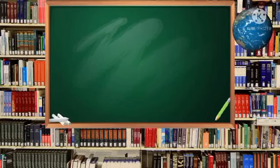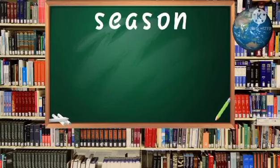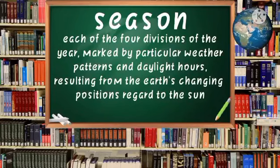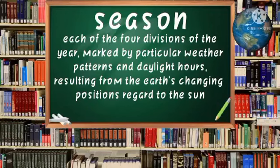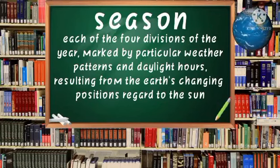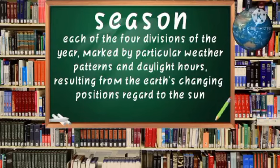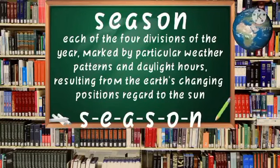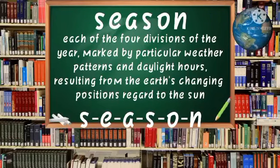Our last word for today is season. Season — each of the four divisions of the year, marked by particular weather patterns and daylight hours, resulting from the earth's changing position with regard to the sun. Let us spell the word season: S-E-A-S-O-N. Season.